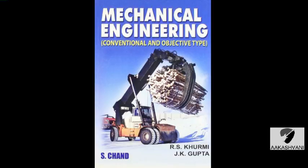Question number 89: The steel produced by Bessemer or open hearth process is inferior to that produced by LD process. Question number 90: The electric process of steel making is specially adapted to alloy and carbon tool steel, magnet steel, high speed tool steel — all of these.